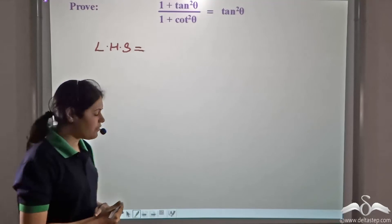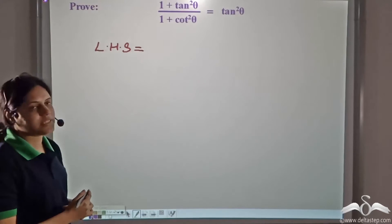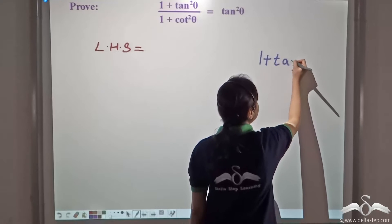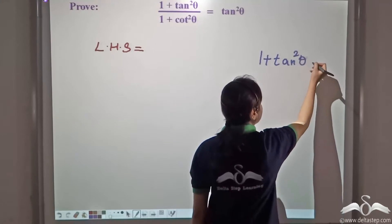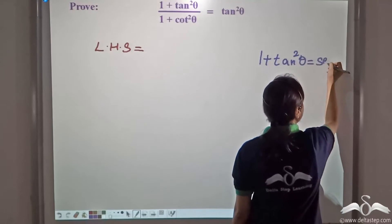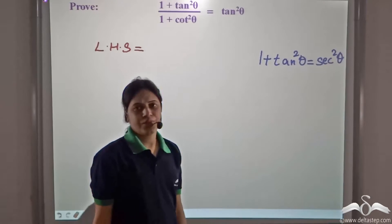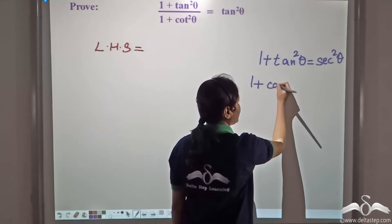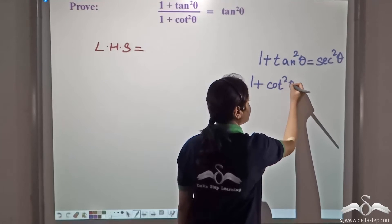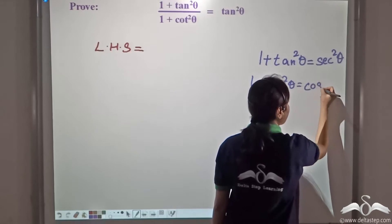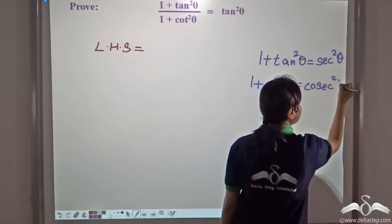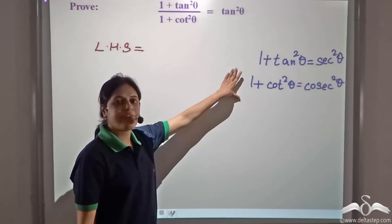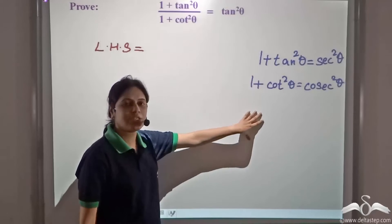Recall that we had learned two identities. We had learned that 1 + tan²θ is equal to sec²θ. And we had also learned that 1 + cot²θ is equal to cosec²θ. So let's simplify the left hand side using these two.